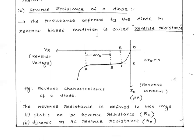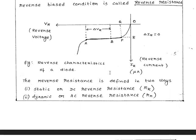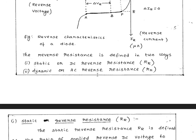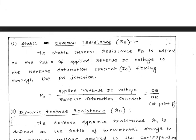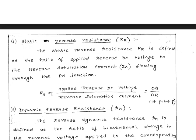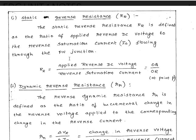Now let's look at reverse resistance. When the diode is in reverse bias, the battery is applied in the reverse direction. There are two types of reverse resistance from the VI characteristics of reverse bias: DC reverse resistance (static) and AC reverse resistance (dynamic). The DC reverse resistance RR equals the ratio of applied reverse voltage to reverse saturation current.